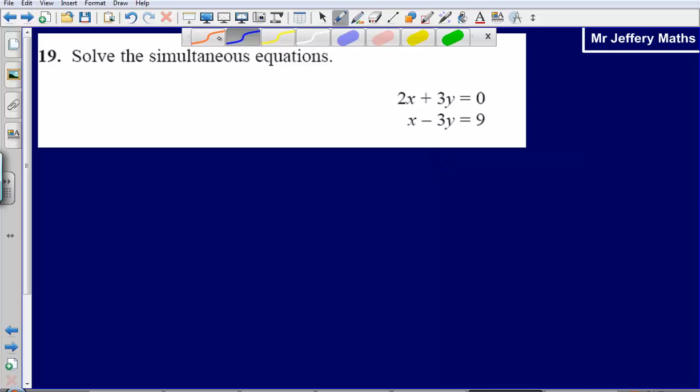This is question 19 from the 2008 non-calculator paper. Here we are asked to solve the simultaneous equations 2x plus 3y equals 0, x minus 3y equals 9.